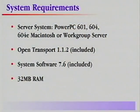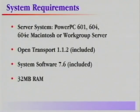The system requirements for AppleShare IP 5.0 are fairly basic. First, it requires a PowerPC processor — 601, 604, or 604e. We don't support any 68040 or 030 systems. AppleShare IP 5.0 is completely native. It requires System 7.6, which is included in the box, and Open Transport version 1.1.2, also included. Additionally, AppleShare IP 5.0 requires 32 megabytes of RAM. So let me take you through a demonstration of how a Macintosh user would log into AppleShare IP 5.0 — keeping the experience the same, but giving the user the benefit of TCP/IP.